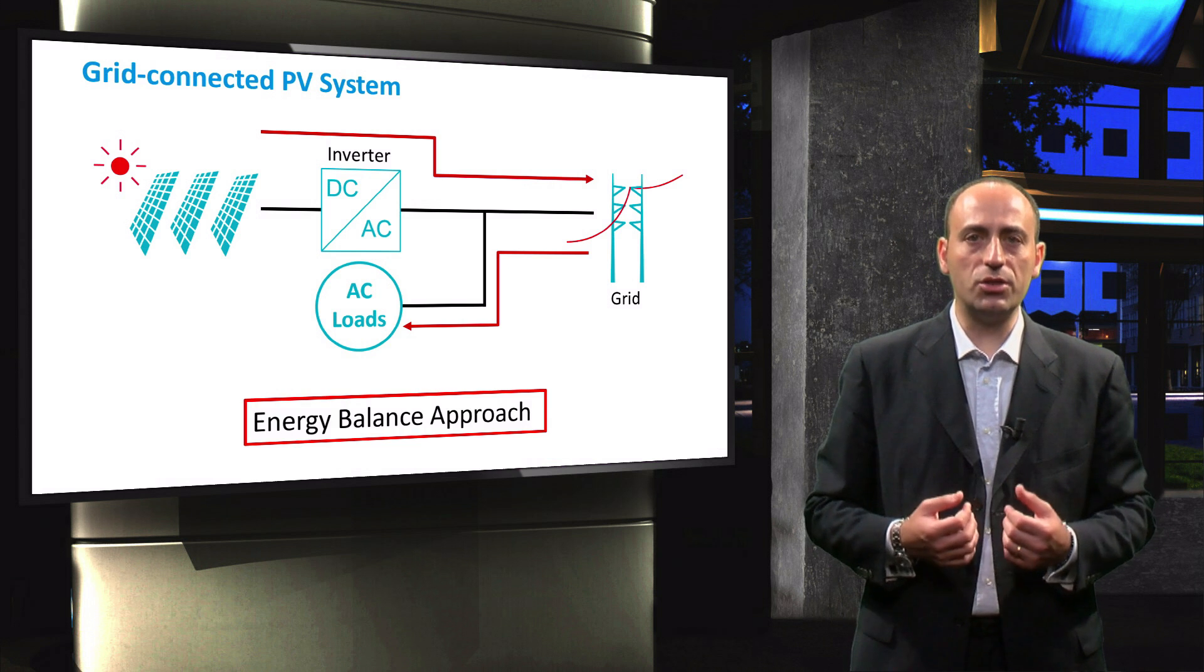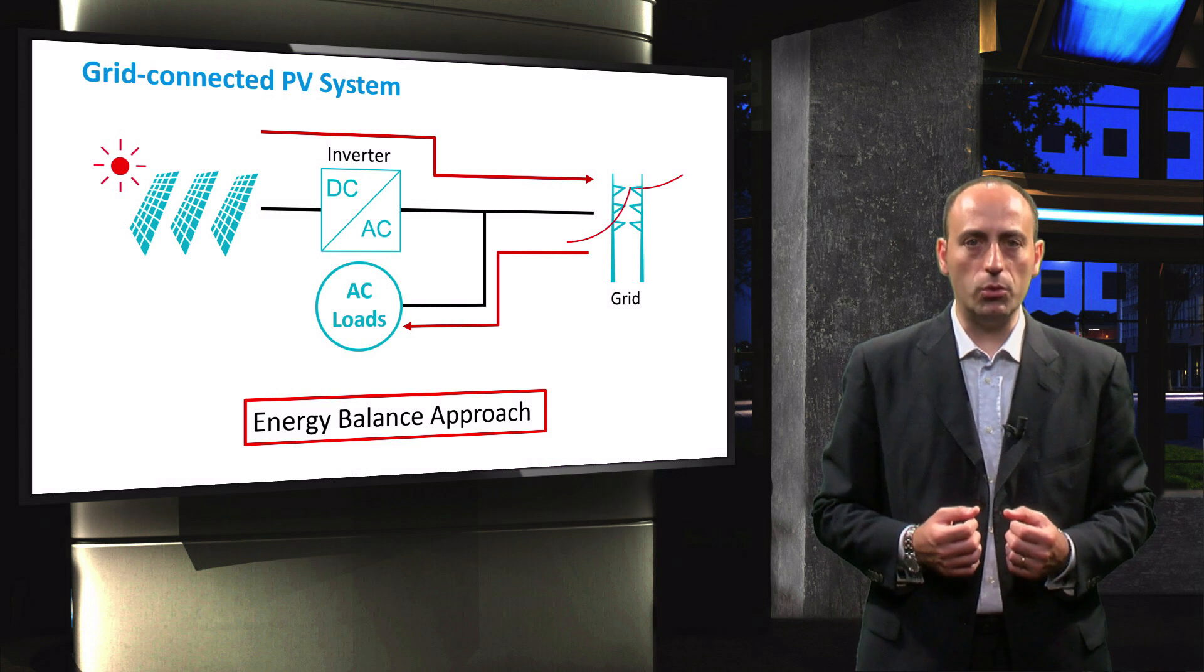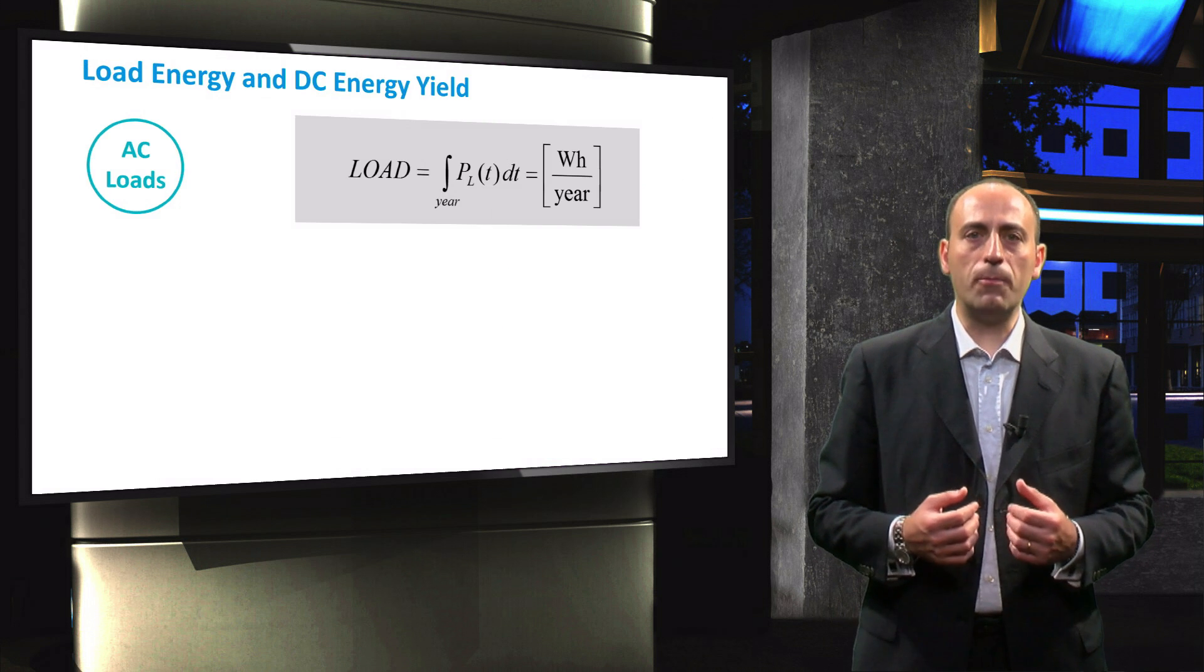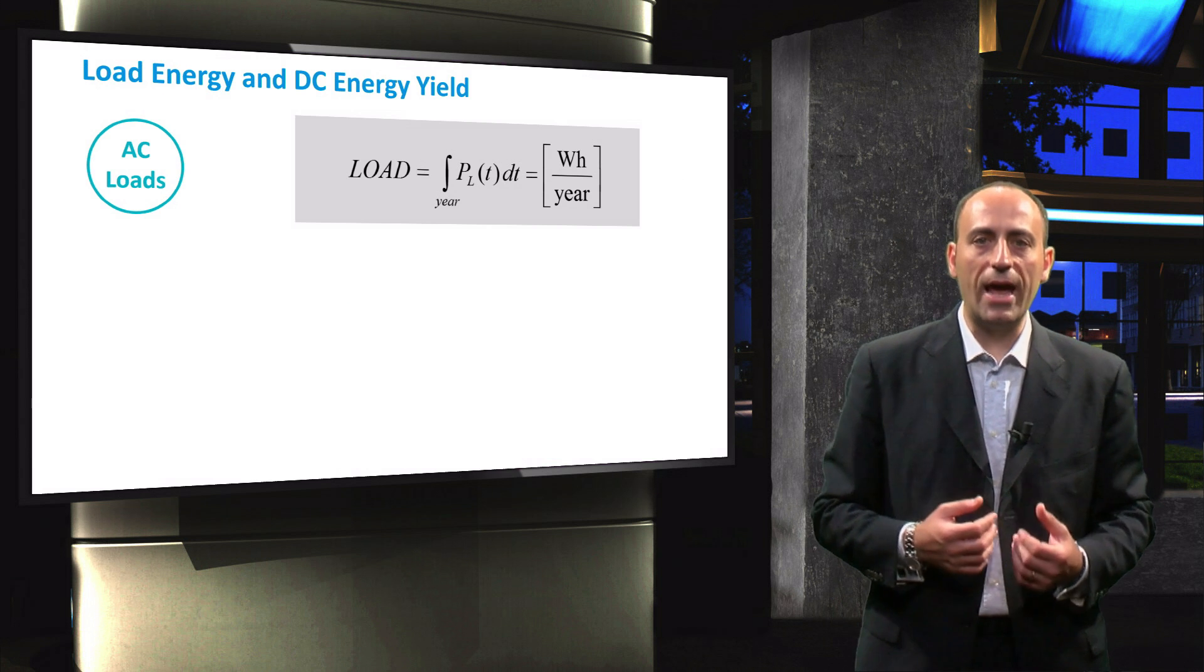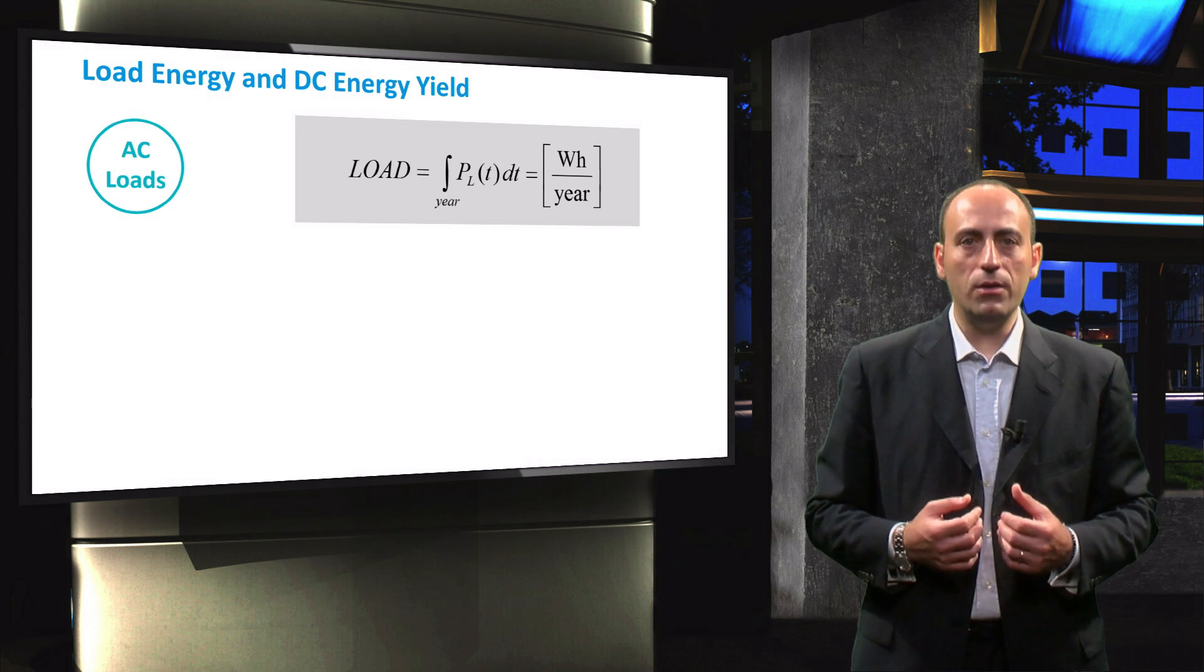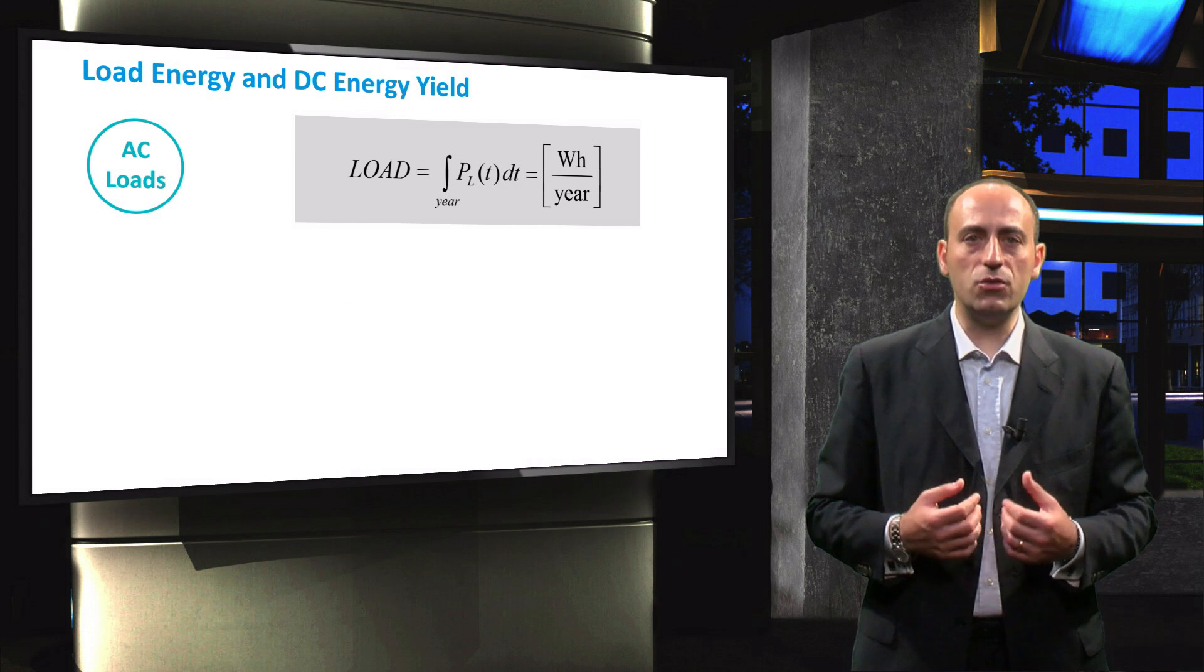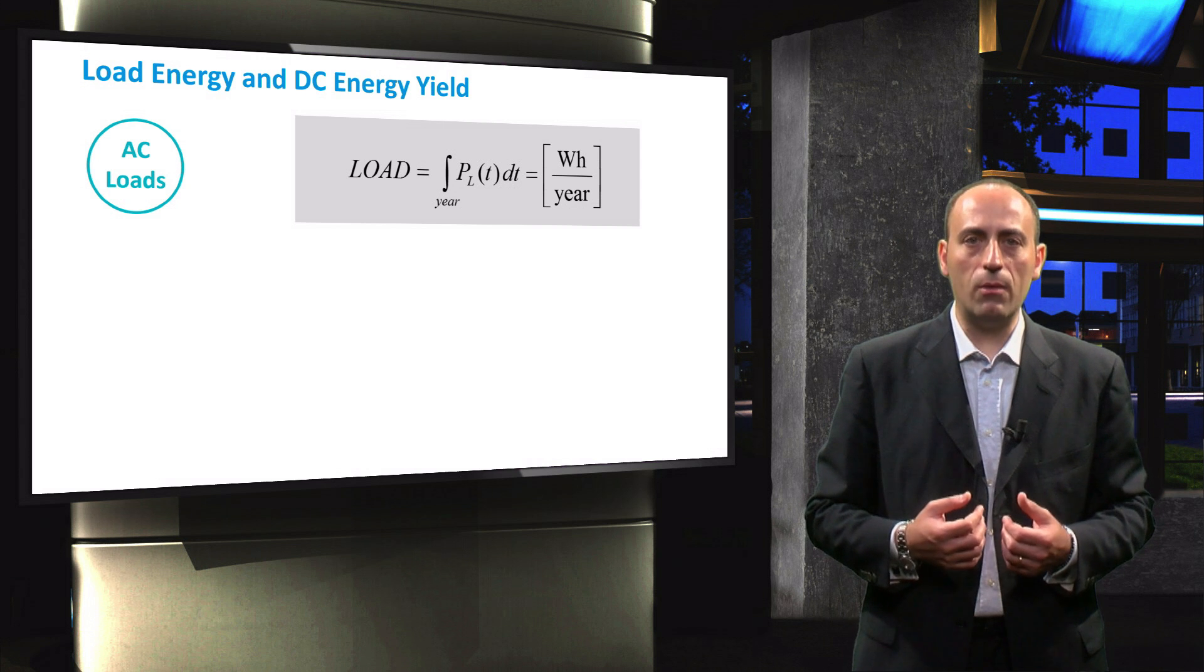This makes it possible to both store the energy from the PV modules and supply energy to the loads. For the design of such a grid-connected PV system, we follow an energy balance approach. The goal of this approach is to design a PV system such that the energy consumption and generation are balanced over an entire year. The energy consumption by the loads, as you may recall, is obtained by integrating the instantaneous load power, PL.